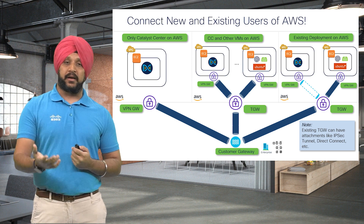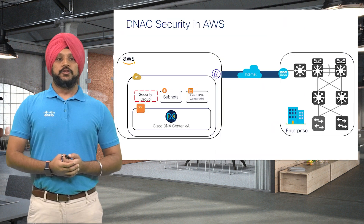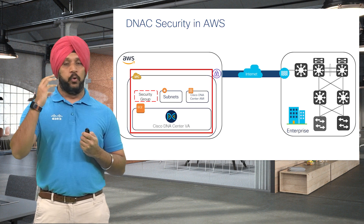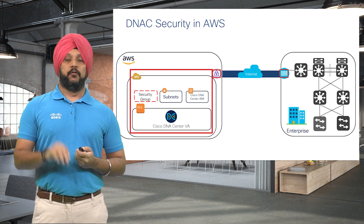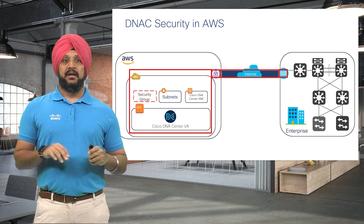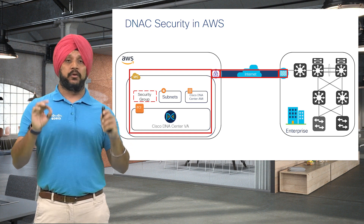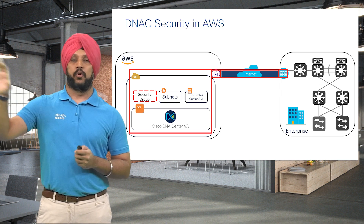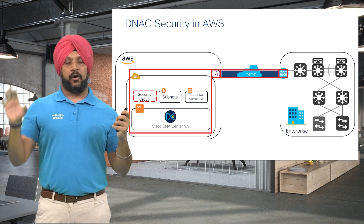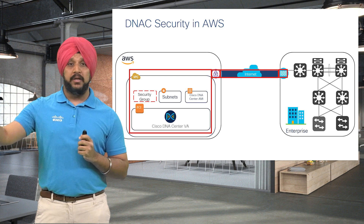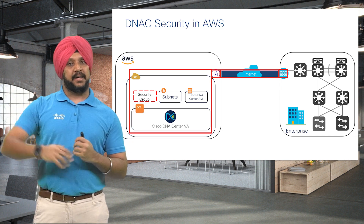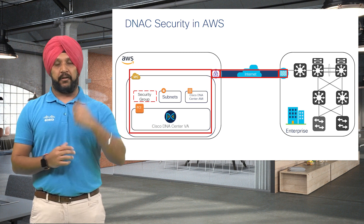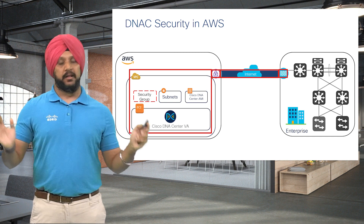Your existing transit gateway can be IPSec, Direct Connect, or other supported scenarios. Security is thought about from day zero with the Launchpad application. You are already secured inside a VPC on AWS. We also create a VPN gateway and firewall on both sites, and through the secure IPSec tunnel, only the right IP addresses and ports are allowed to communicate. There is no direct internet access to your Catalyst Center from AWS — any communication has to be through this tunnel. Only enterprise devices can connect to the Catalyst Center, and nobody else can talk to it.